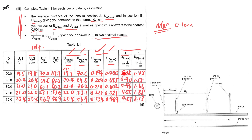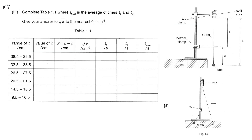Once done, do a double check: make sure there are no units inside the table body, and check consistency — one decimal place where required, and make sure to include trailing zeros like 0.0. Once everything is good, proceed to plotting the graph.